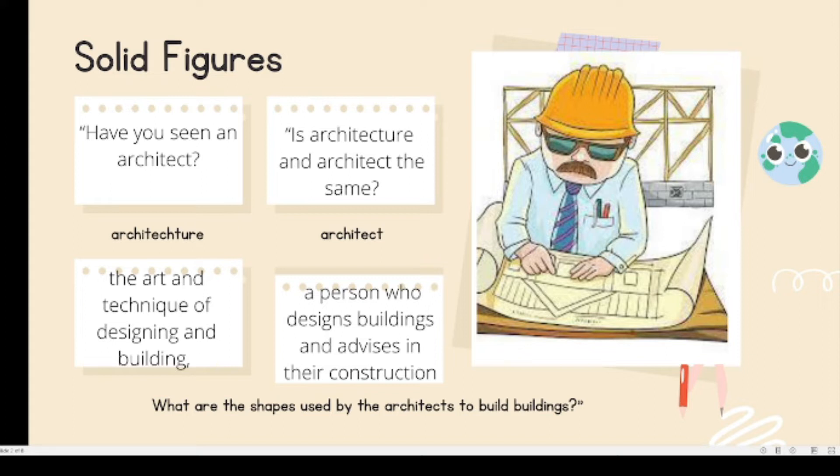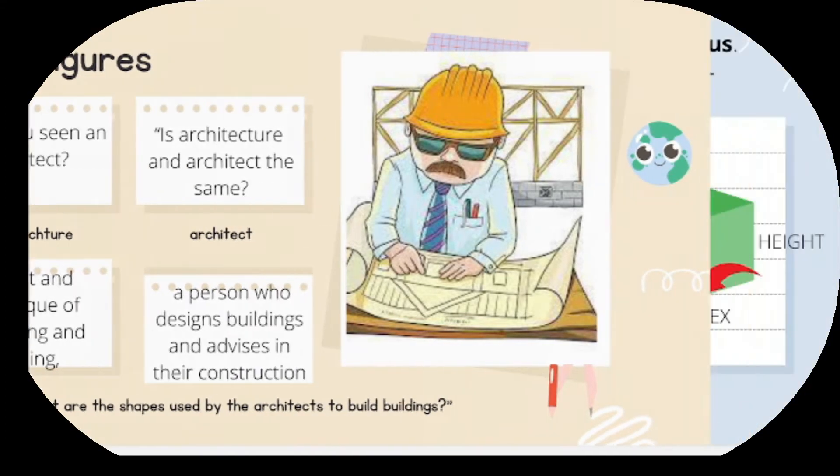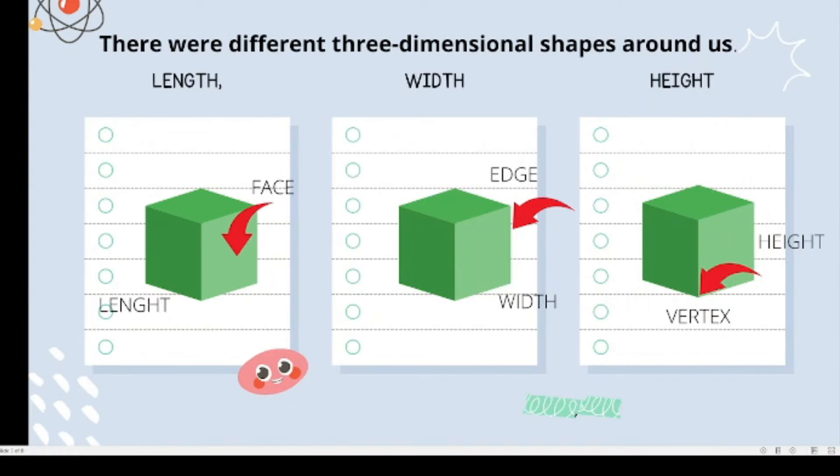Let's find out. There were different three-dimensional shapes around us. There were many solid objects. Solid figures are three-dimensional figures. A three-dimensional object has length, width, and height.